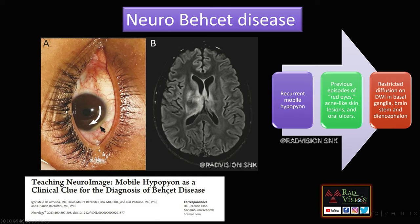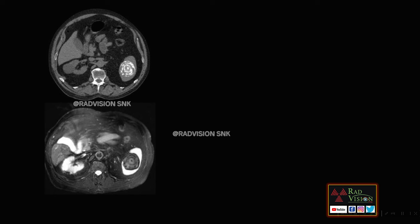Neuro-Behçet's disease features include recurrent mobile hypopyon, previous episodes of red eyes, acne-like skin lesions and oral ulcers, and restricted diffusion on DWI in the basal ganglia, brainstem, and diencephalon — these are the classical imaging features.